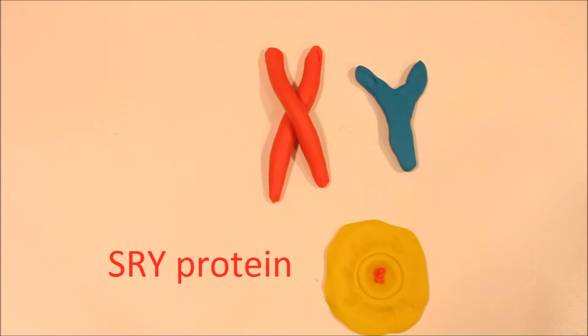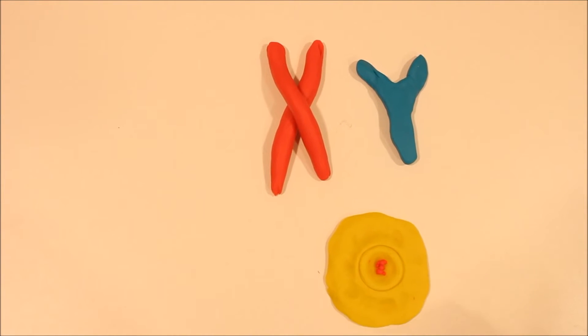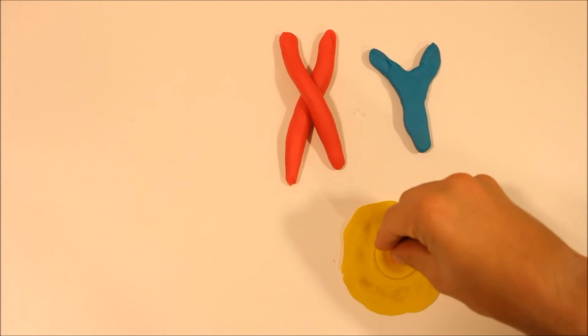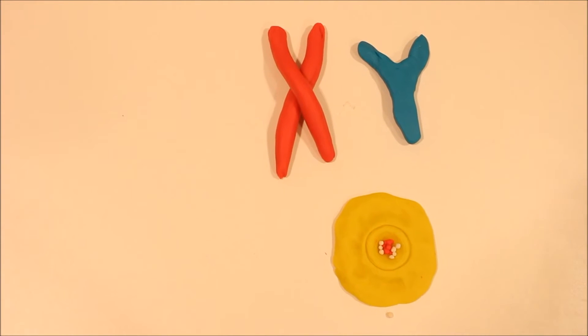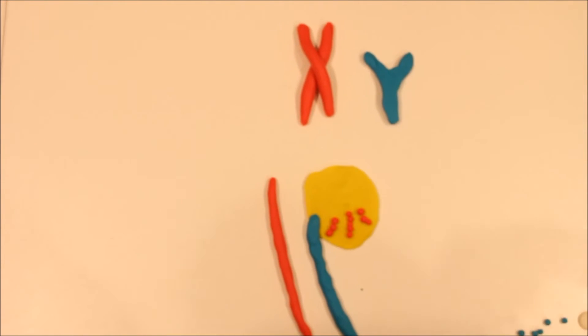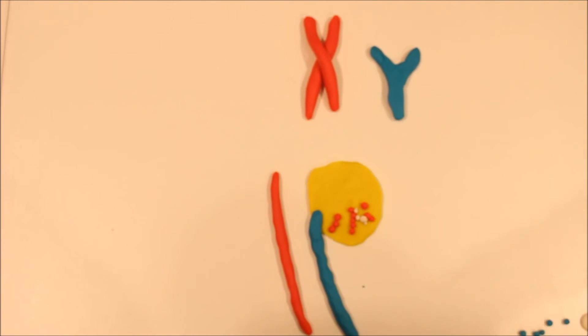SRY then leads to the production of SOX9, which through various mechanisms and feedback loops starts the development of the gonads into testes. Under the influence of SOX9, gonadal cells around the germ cells will start to differentiate into Sertoli cells and aid in the future creation of sperm cells.